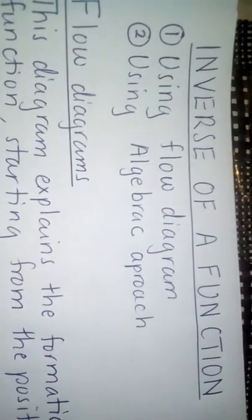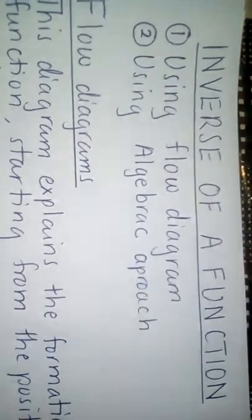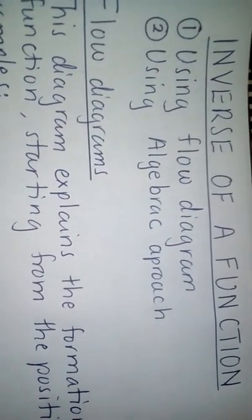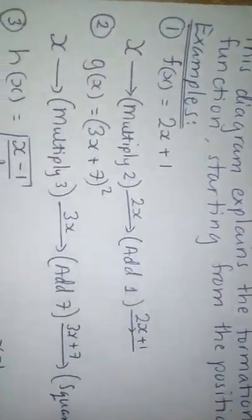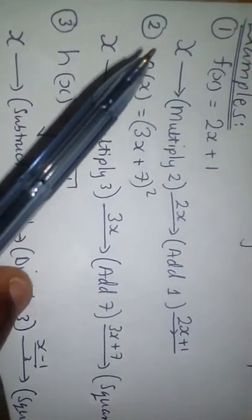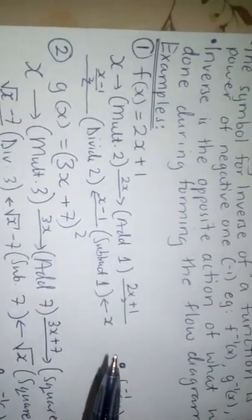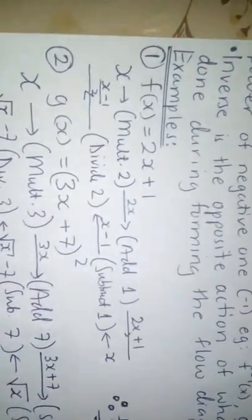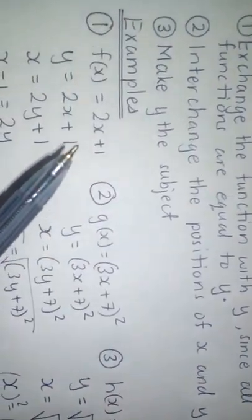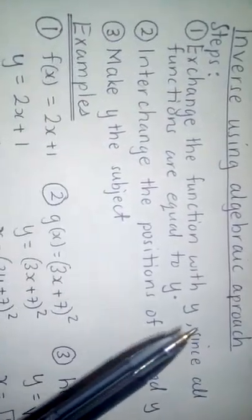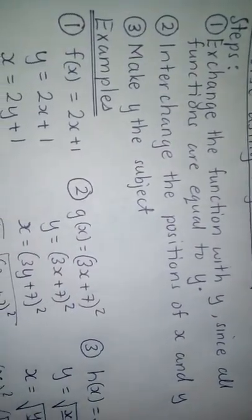We have now seen the inverse of a function using two different approaches: the flow diagram and the normal algebraic approach. We saw what the flow diagram means — the arrangement of how the function was formed. Then we found the inverse by doing the opposite action from the flow diagram. Finally, we found the inverse using the algebraic approach by following the three steps.